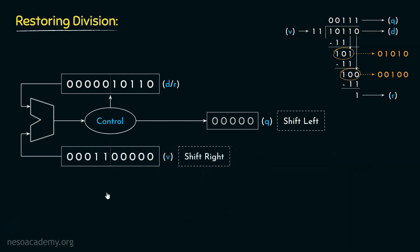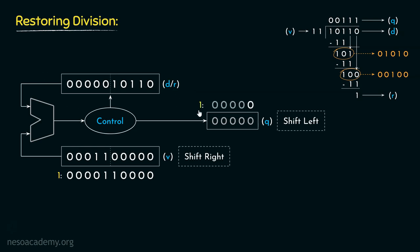At the first iteration, we shift the entire content of register V towards the right once. Comparing the resulting bits: the divisor portion is still greater than the dividend portion, so the subtraction would result in a negative value and we restore the content of DR. By the end of the first iteration, we shift the 4 bits in Q towards the left and update the LSB with 0, because the subtraction result was negative.